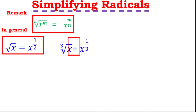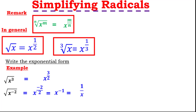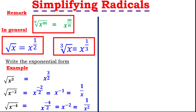The cube root of x equals x raised to the power 1 over 3. For example, the exponential form of the square root of x cubed is x raised to the power 3 over 2. If we have the square root of x raised to the power negative 2, it becomes x raised to the power negative 2 over 2, which simplifies to x raised to the power negative 1, which equals 1 over x. Similarly, the square root of x to the negative 4 gives x to the power negative 4 over 2, which is x to the power negative 2, or 1 over x squared.